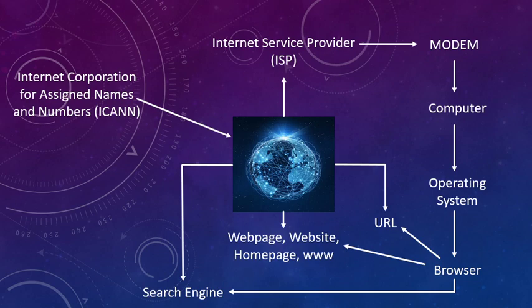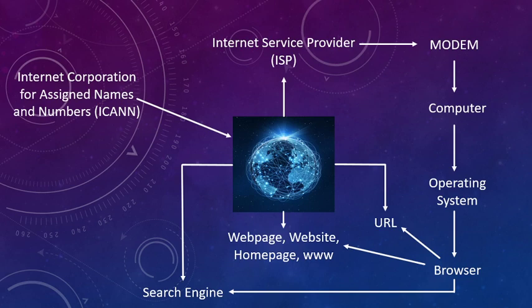The second is software, which is the logical component through which you give commands or instructions. The operating system is the main system software through which a computer, laptop, or desktop operates. You might have seen Windows 7 or Windows 10 as operating systems. On your smartphone you might have seen the Android operating system, or Mac OS on an iPhone. Once the operating system is installed on your internet device, you need to have a browser.